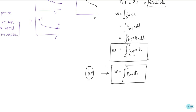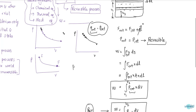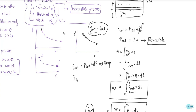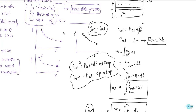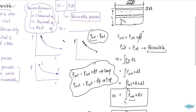Why did we take P_external equal to P_internal? In case of compression, P_external equals P_internal plus dP. But dP is very small because there are infinite states between initial and final state, so dP approaches zero. In case of expansion, P_external equals P_internal minus dP. So in both cases for reversible process, dP is zero, and that is why P_external equals P_internal.